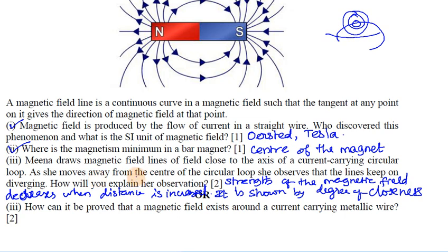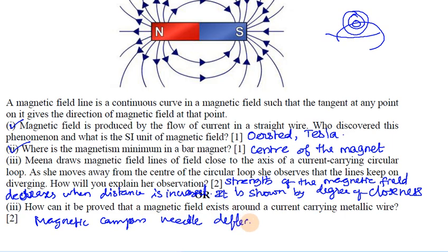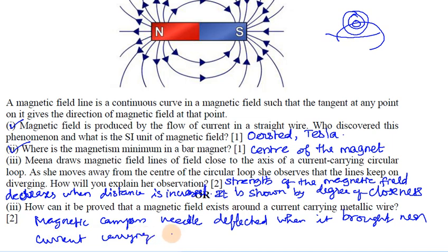How can it be proved that a magnetic field exists around a current-carrying metallic wire? A magnetic compass is deflected when it is brought near a current-carrying metallic wire, demonstrating that a magnetic field exists around it.